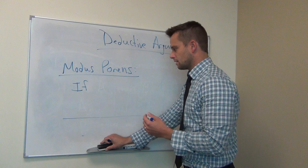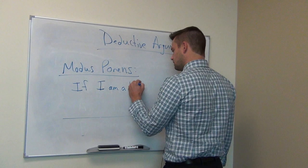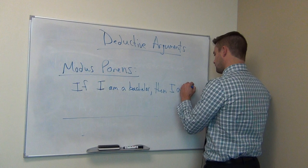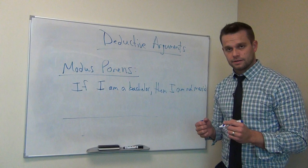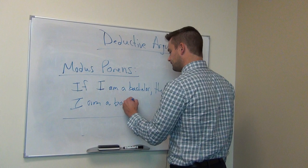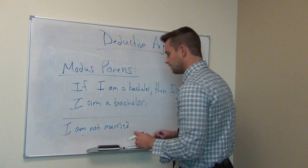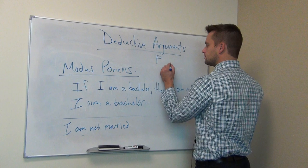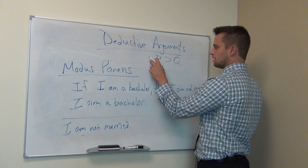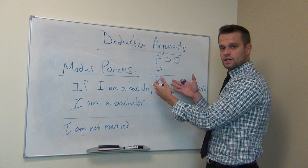Let's make a concrete example. If I am a bachelor, then I am not married. I am a bachelor. Therefore, I am not married. The name of this form is modus ponens. If we symbolize it: if P then Q — this horseshoe shape means 'if this, then that' — and P, therefore Q.